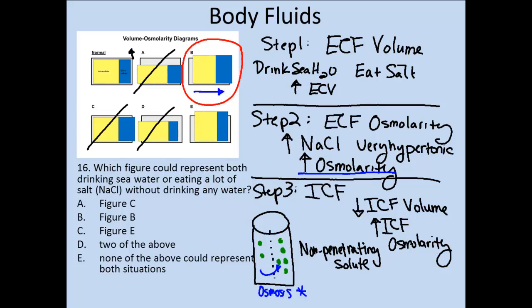Our best response is response B. We see an increase in osmolarity of our fluids because of the added sodium chloride from seawater or salt, and a shift of fluids from the intracellular space into the extracellular space — the movement of water by osmosis to equalize osmolarities on either side of the plasma membrane. Hopefully this clarifies this complex problem. If you have any remaining questions, feel free to contact me.